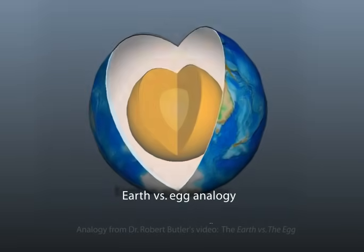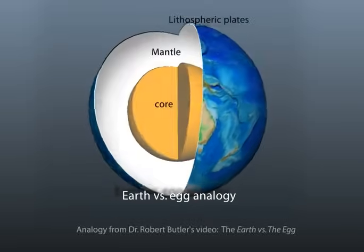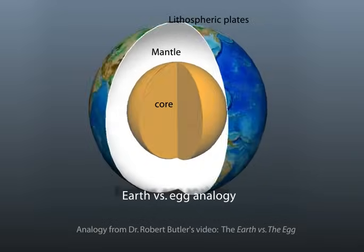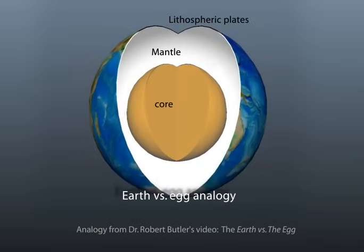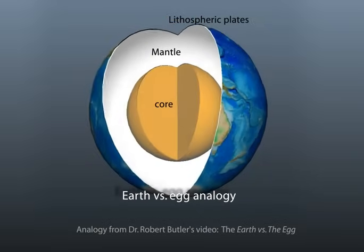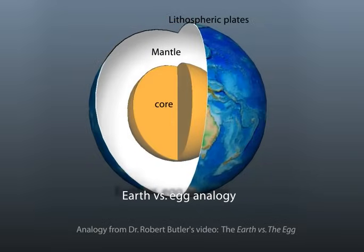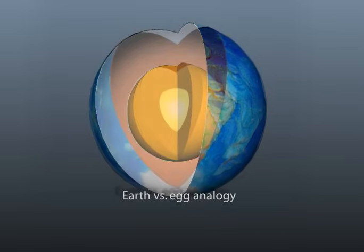As an analogy for relative scale, these layers can be compared to an egg, with the shell representing the outermost brittle layer, the white representing the mantle, and the yolk representing the core.